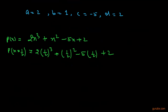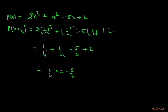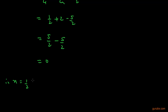This gives us 1/4 + 1/4 - 5/2 + 2, which equals 1/2 + 2 - 5/2. Adding 1/2 and 2 gives 5/2, and 5/2 - 5/2 = 0. Since p(1/2) = 0, x = 1/2 is a zero of the given polynomial p(x).